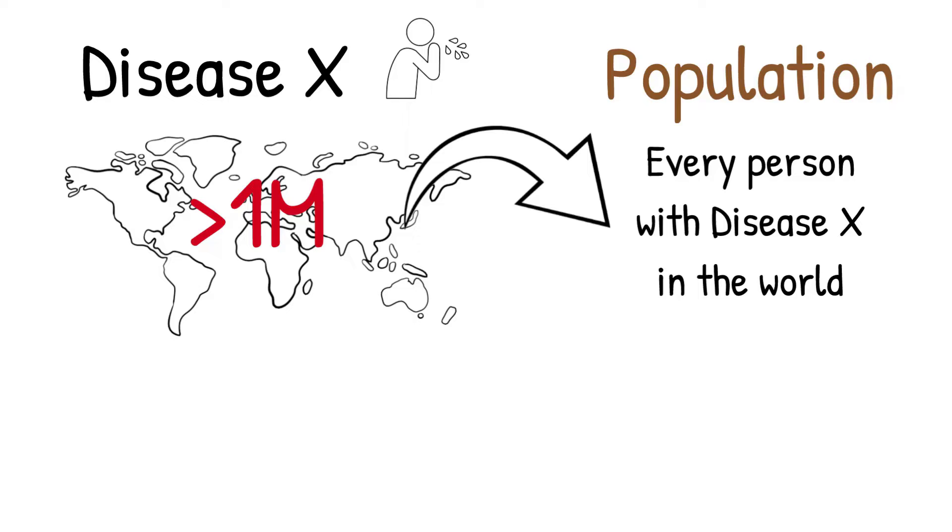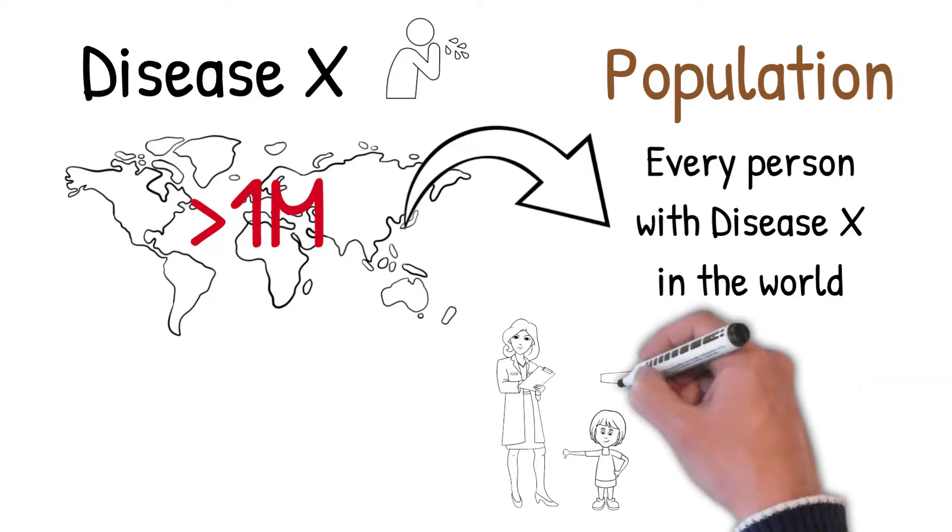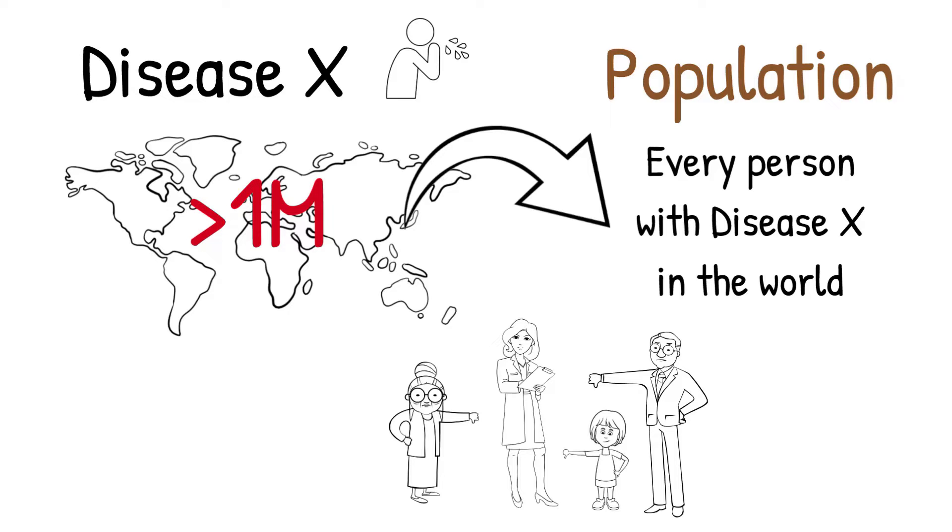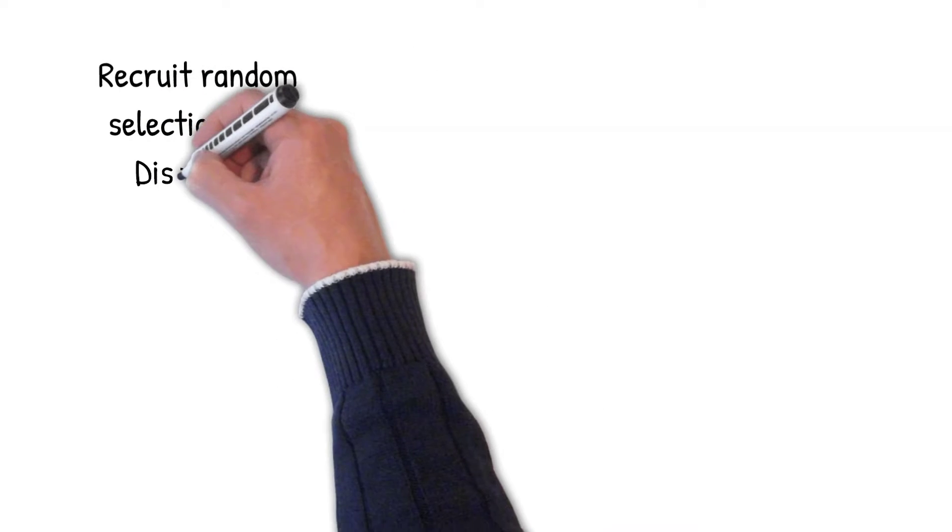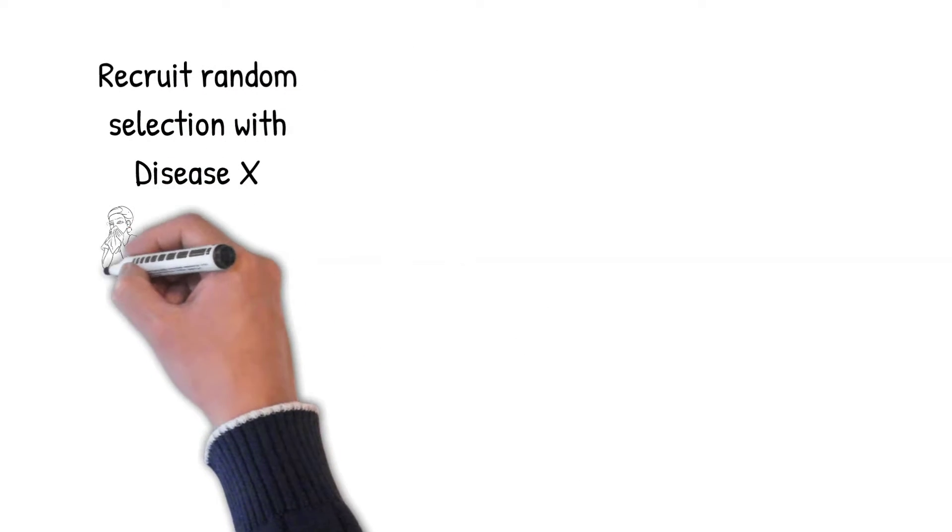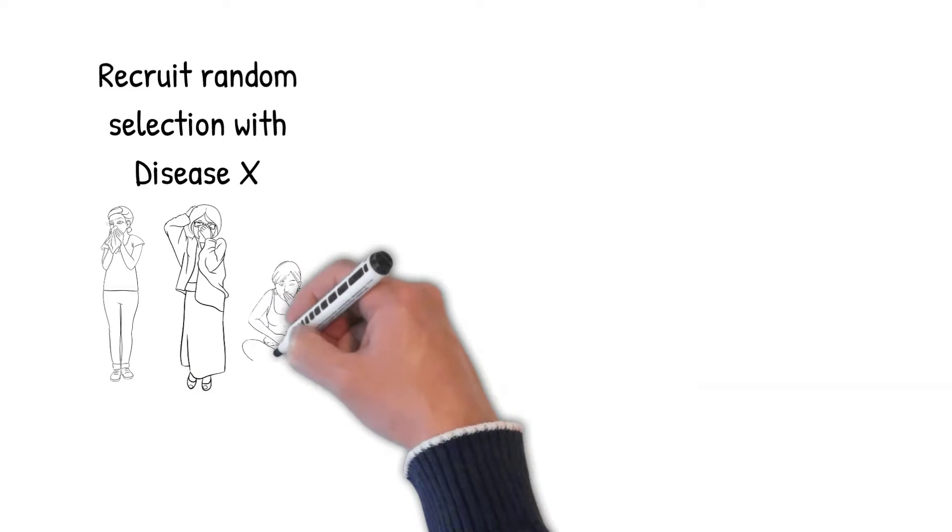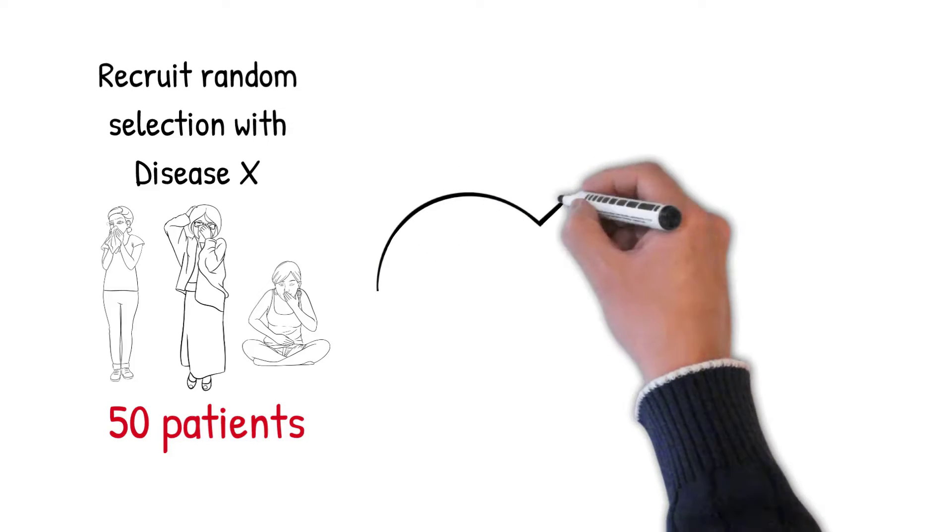As scientists, it would be extremely hard, almost impossible, to recruit every person in the world who had Disease X. For example, some people may decline to be recruited in a study, and some people may be in a different country altogether to the study itself. So, what's the next best thing? Well, to get around this, we perform an experiment using a random selection of people with Disease X. Say we recruited 50 people in the study with Disease X. This group right here is known as a sample.